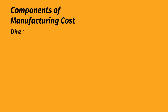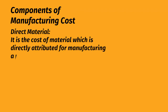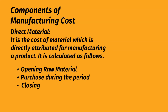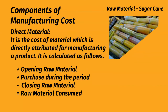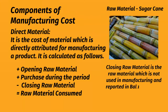Components of manufacturing cost: Direct Material. It is the cost of material which is directly attributed to manufacturing a product. It is calculated as follows: add opening raw material, add purchased during the period, less closing raw material — equals raw material consumed. Closing raw material is the raw material which is not used in manufacturing and is reported in balance sheet current assets.